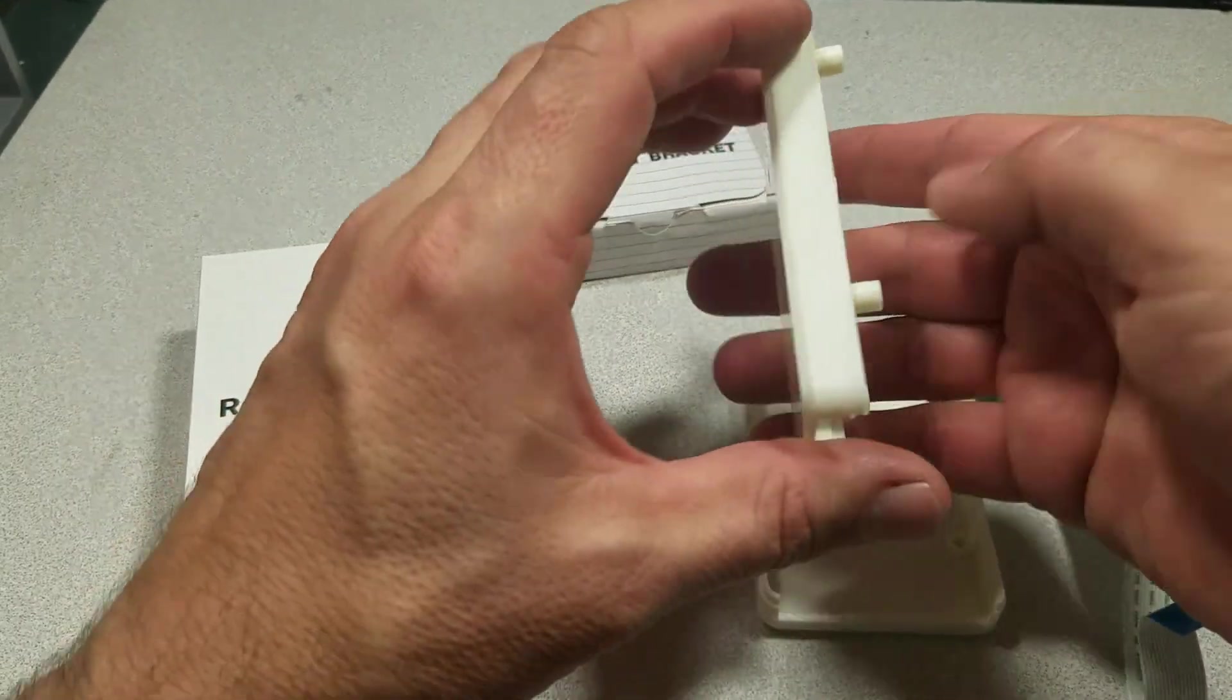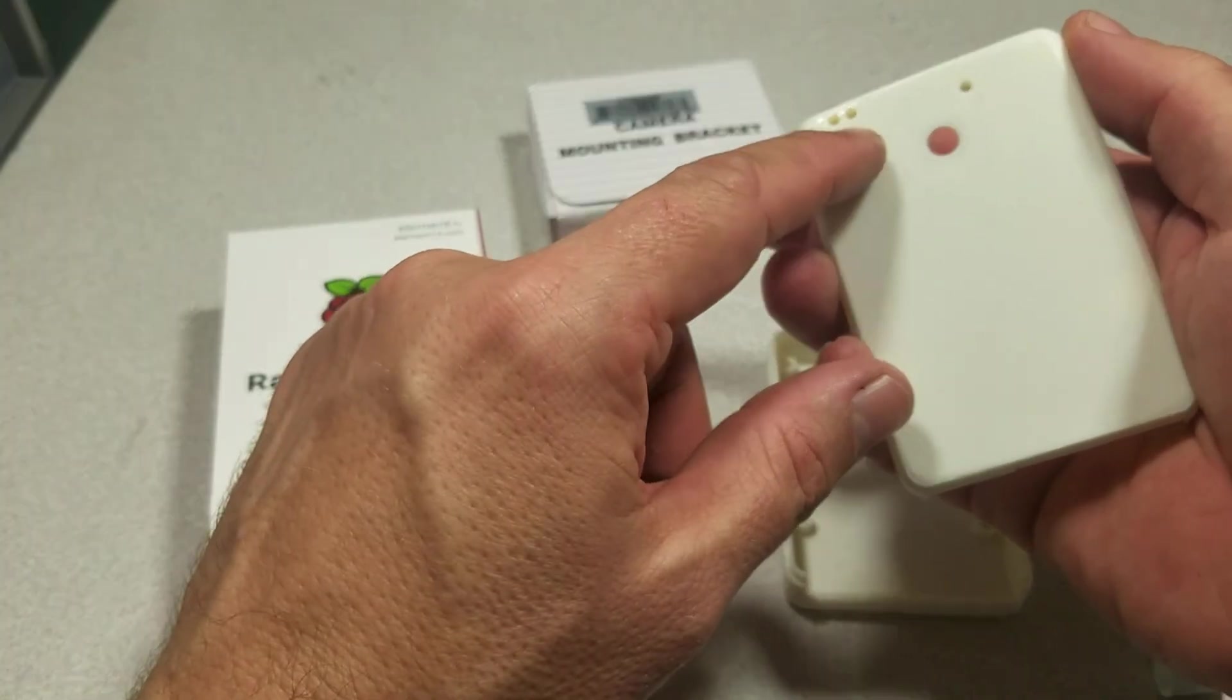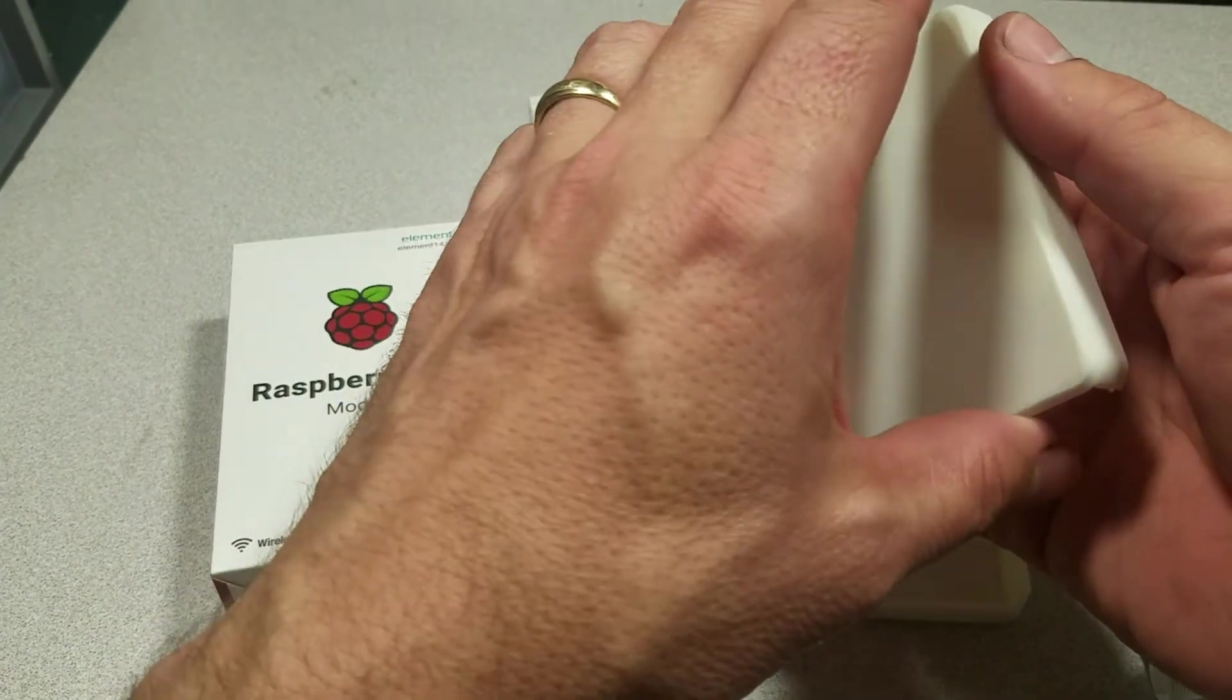And then on the front side here we've got an opening for the Raspberry Pi camera, along with a record light opening, power, and microSD activity light.